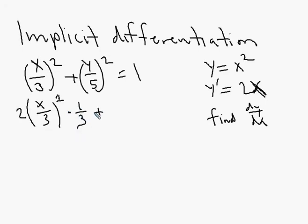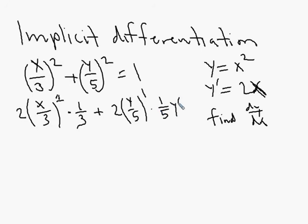Then we add the derivative of the next term. It's also a composite function, so the 2 comes down, becomes a 1, the inside stays the same, and we multiply by the derivative of the inside. The derivative of y/5 is y prime over 5 — think of it as (1/5)·y, so the 1/5 stays and we multiply by y prime, the derivative of y.